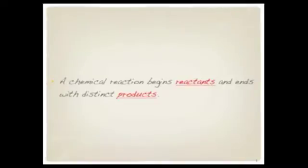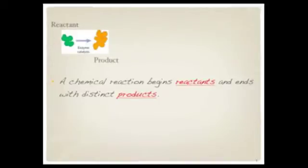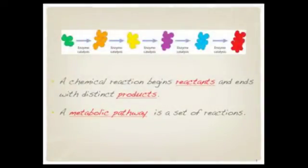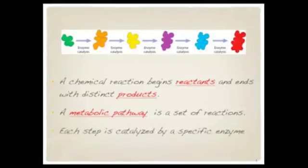You should know by now that a chemical reaction begins with specific molecules called reactants and ends with distinct molecules called products. That's one chemical reaction. But metabolism is all the chemical reactions going on, so we organize these chemical reactions into things called pathways. A metabolic pathway is a set of chemical reactions. Each step of this pathway is catalyzed, or made to go more quickly, with the help of a specific enzyme.